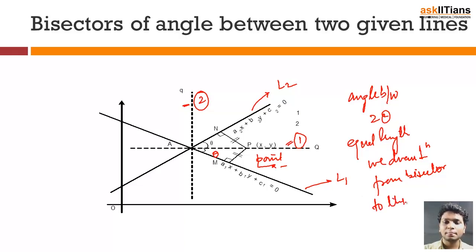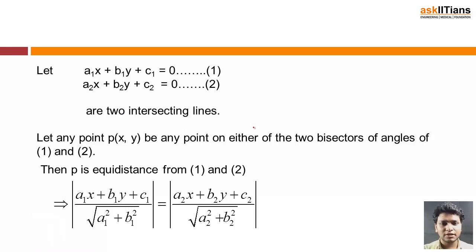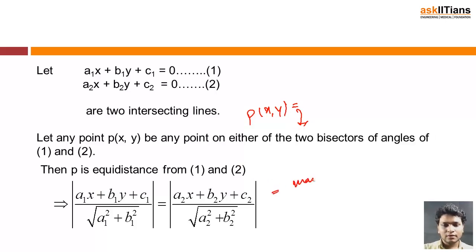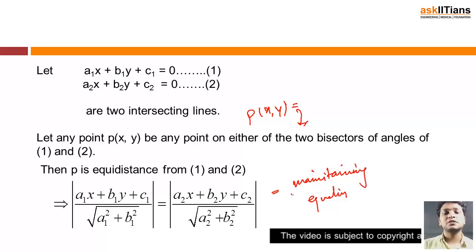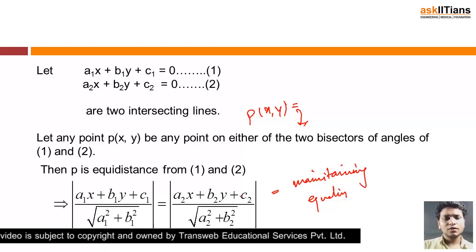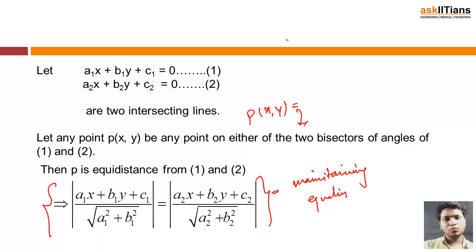We are going to use this equal-length property to find out the locus of the bisector. If a1x + b1y + c1 = 0 and a2x + b2y + c2 = 0 are the two lines that intersect, and P(x, y) is any point on one of the two bisectors, then P is equidistant from both lines. Equating the distances gives: |a1x + b1y + c1| / √(a1² + b1²) = |a2x + b2y + c2| / √(a2² + b2²).